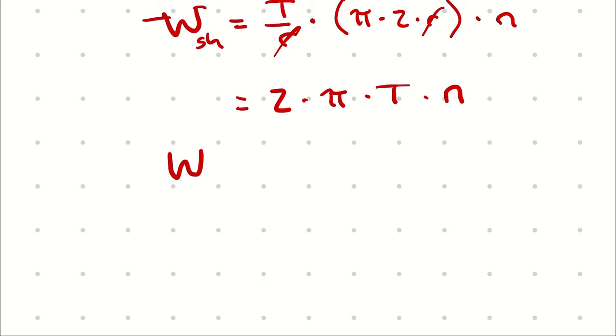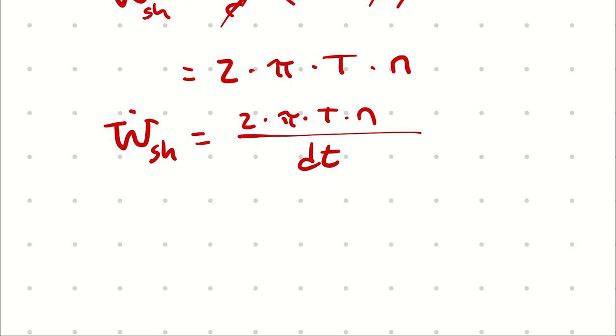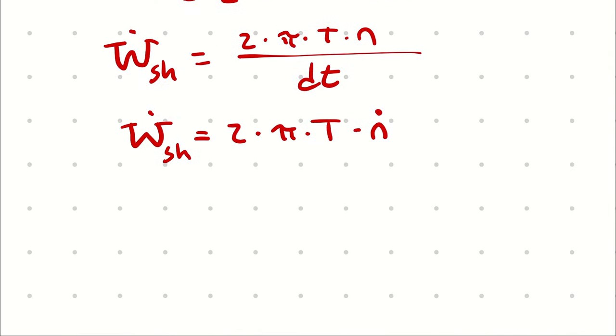And since I'm probably more conveniently able to write shaft power, that's going to be 2 times pi times torque times number of revolutions divided by time. And I could just wrap dt into n and write this as 2 times pi times torque times number of revolutions per unit time, which I will write as n dot. So this is just a simplification, a shorthand that we use for describing shaft power. And this is the torque applied multiplied by the number of revolutions per second.